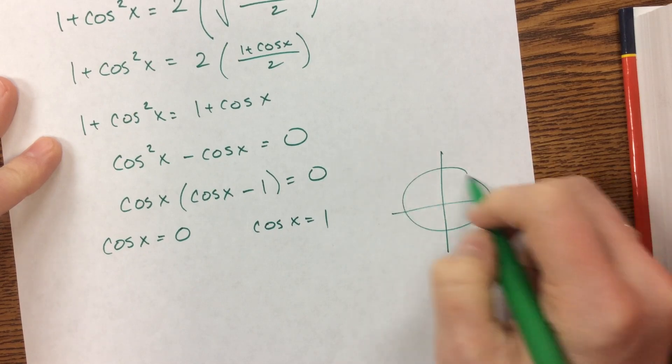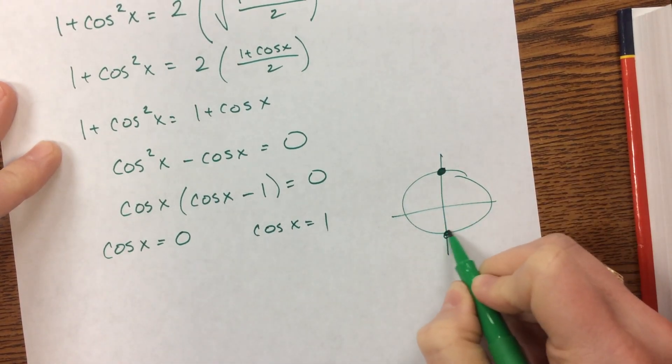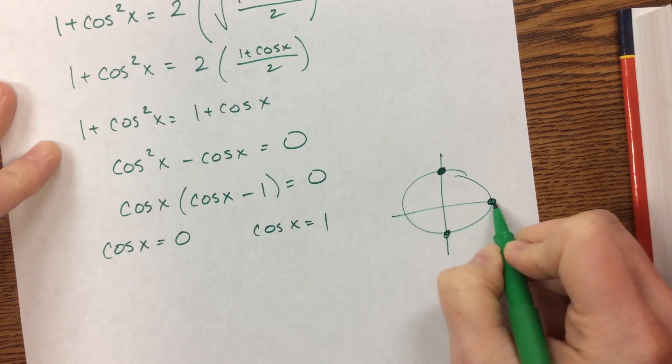On my unit circle, cosine equals 0 here and here, and then cosine equals 1 over here.